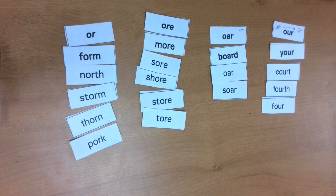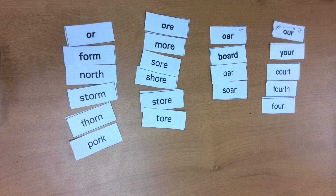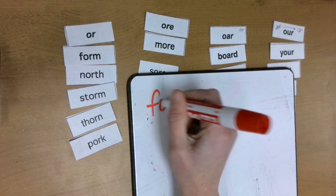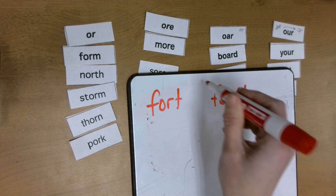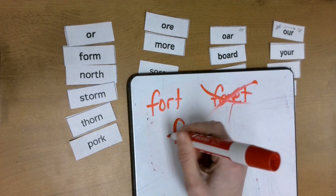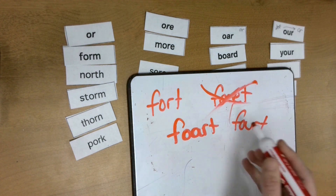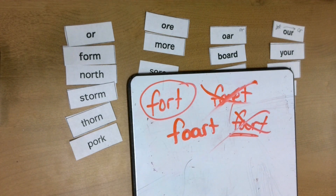My next word is FORT. Go ahead and tap that out with me. FORT — like I built a fort out of sticks, or maybe a blanket fort. Let's try each one: FORT like that? No silent E in the middle of a word — that's not right. Is it FORT like this, or FORT like this, or FORT like this?